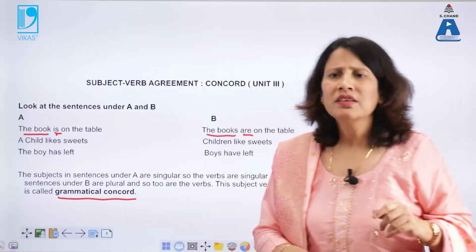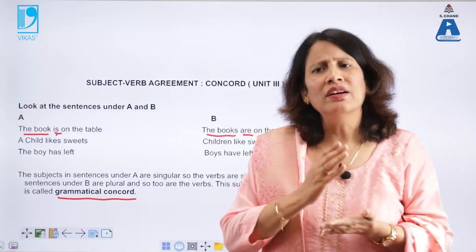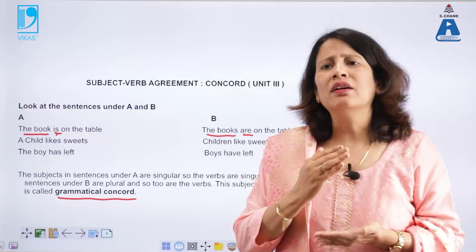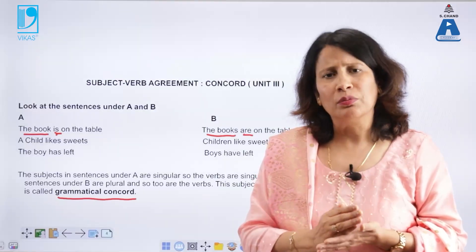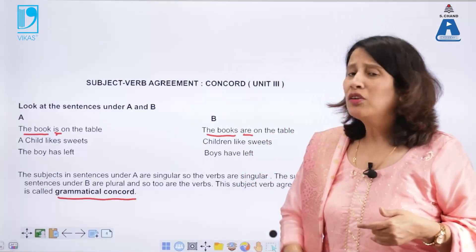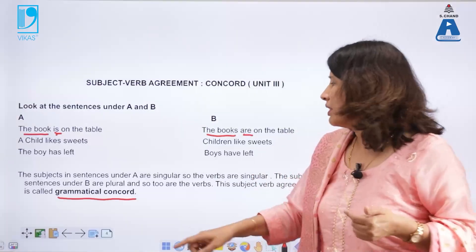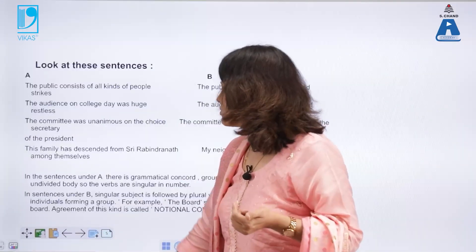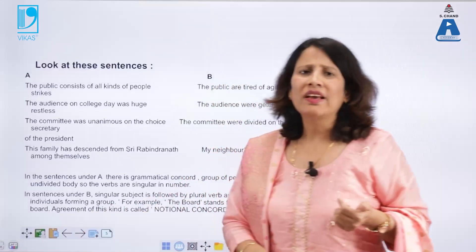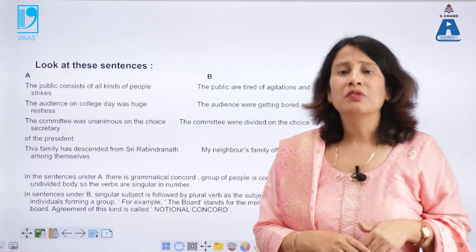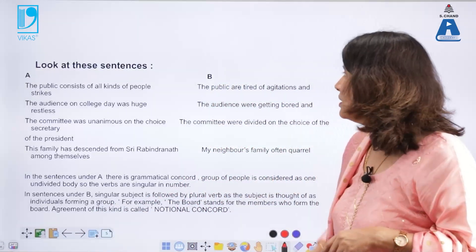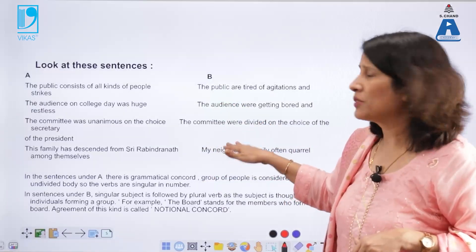Grammatical concord means a singular subject followed by a singular verb, and a plural subject followed by a plural verb. But on the contrary, we have something known as notional concord. We will come to this a little later — let us see these examples first.